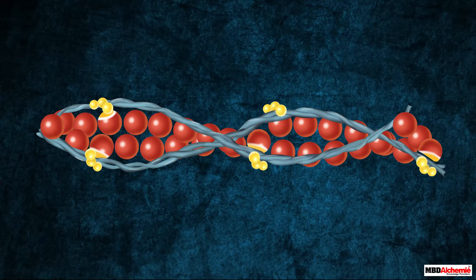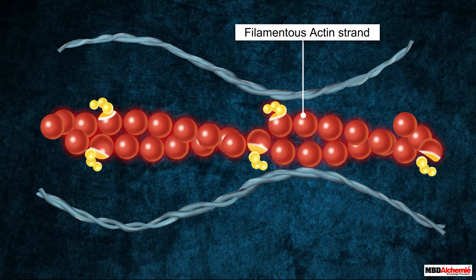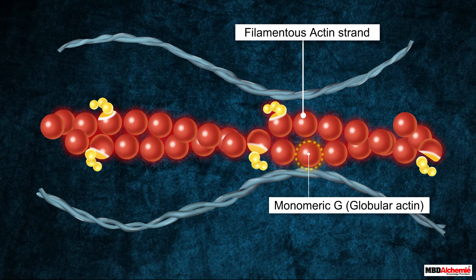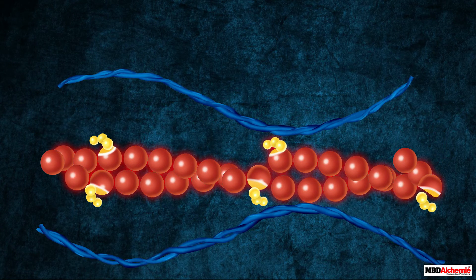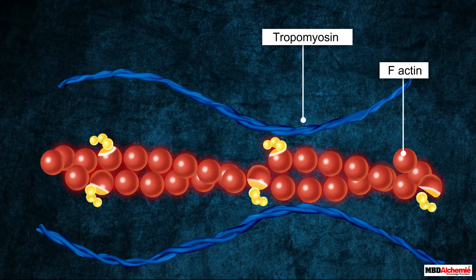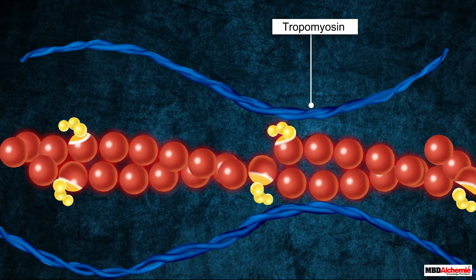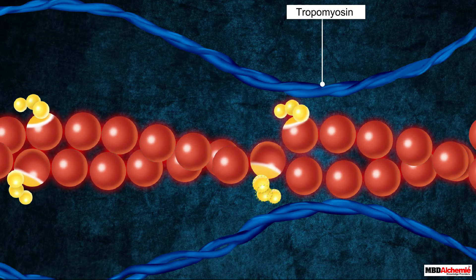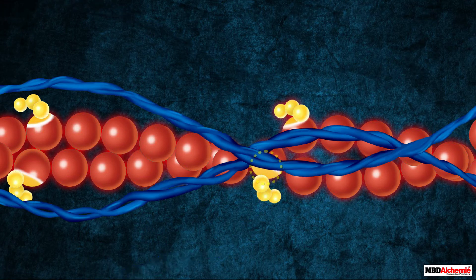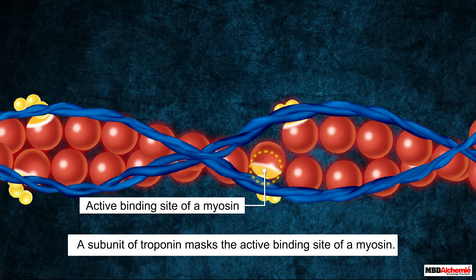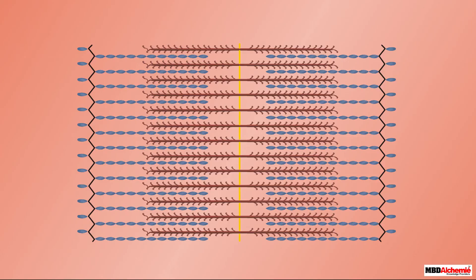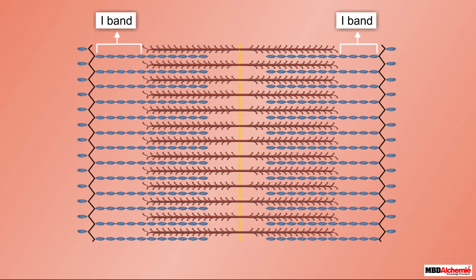Let us now zoom inside the light band containing actin protein. Each actin or thin filament is made of two F-actin (filamentous actin) strands helically wound to each other. Each F-actin is a polymer of monomeric G-actin (globular actin). There are two filaments of a regulatory protein called tropomyosin that run close to the F-actin throughout its length. Another regulatory protein called troponin, composed of three globular peptides, is distributed at regular intervals on tropomyosin. A subunit of troponin masks the active binding site of myosin on actin.